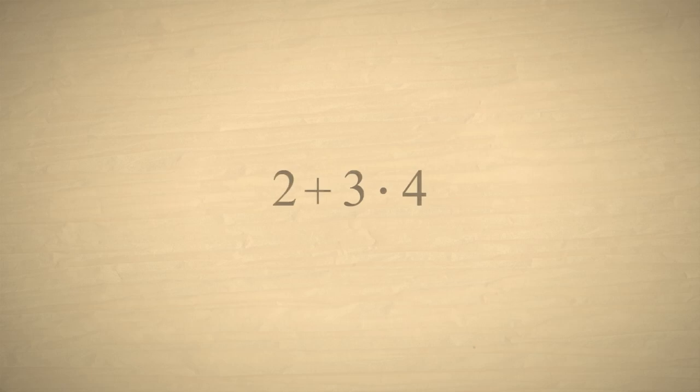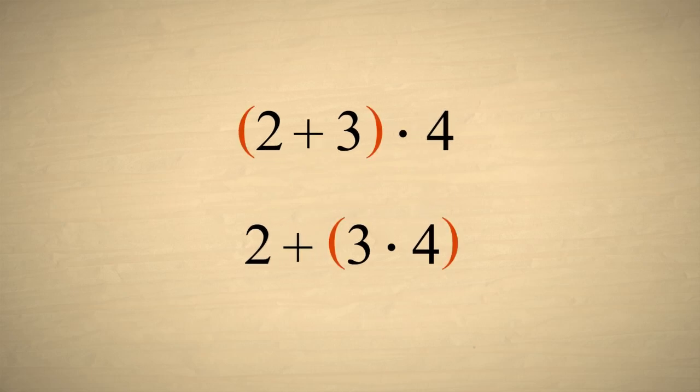But what if we have a group of numbers which are added and multiplied? Does the associative property still apply? Let's take an example where we group 2 plus 3 times 4 in two different ways. When we group numbers in parentheses, the operation inside the parentheses is performed first.